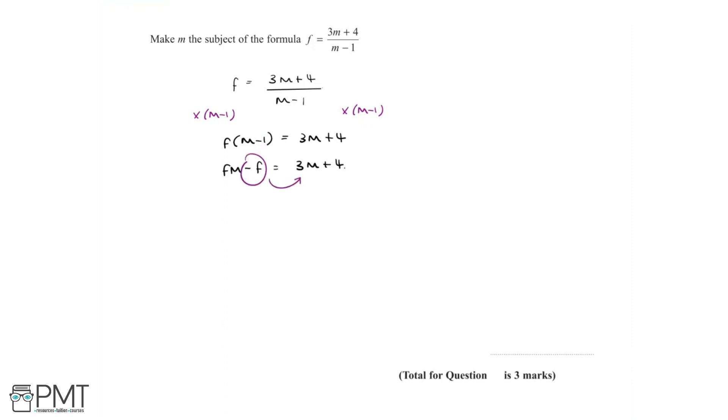We're going to move the minus f over to the other side, which will leave us with fm equals 3m plus 4 plus f.